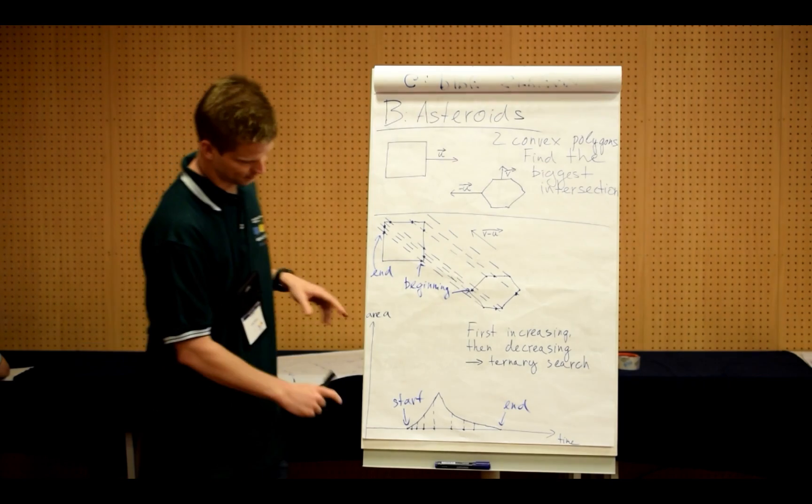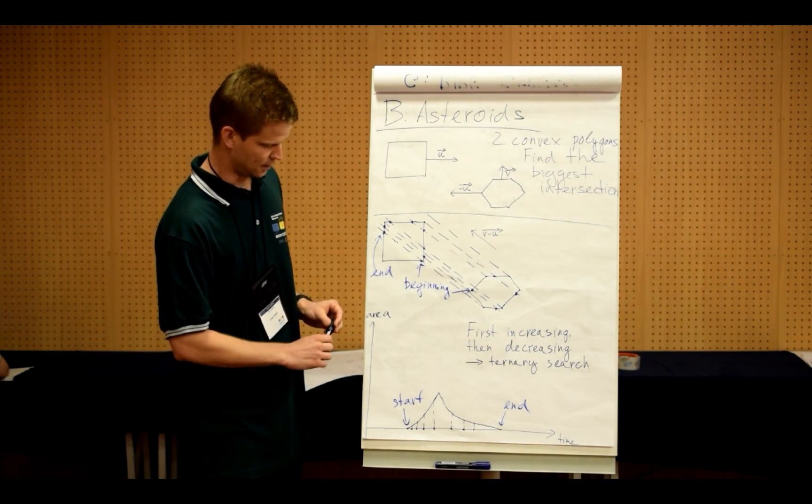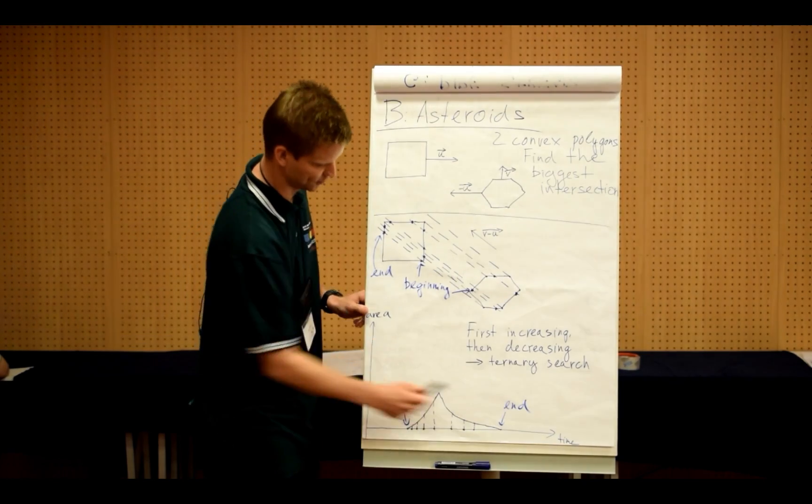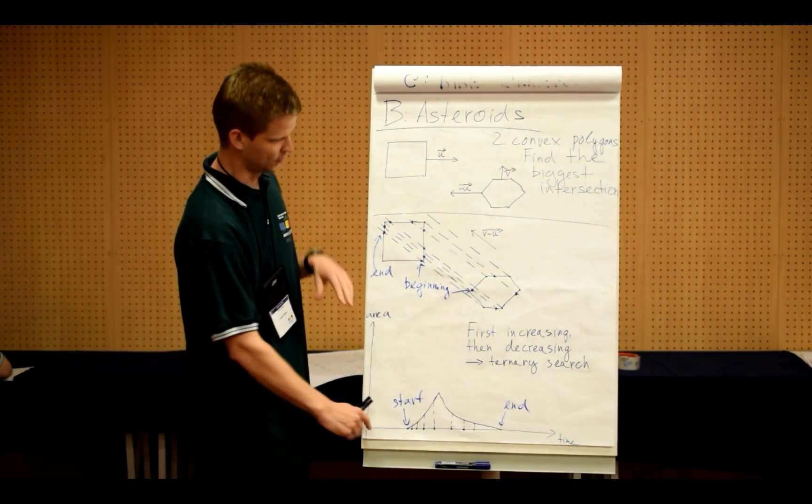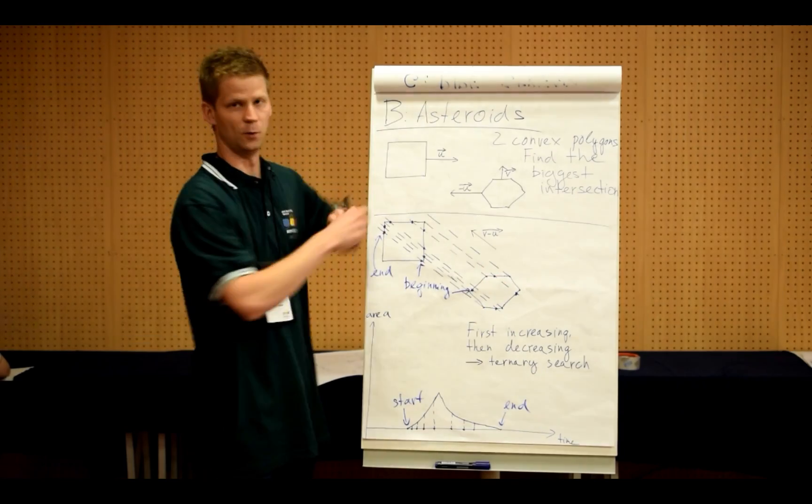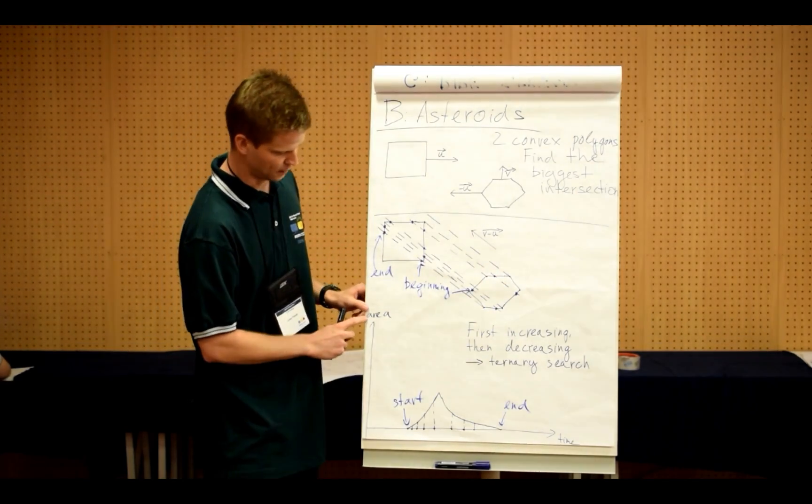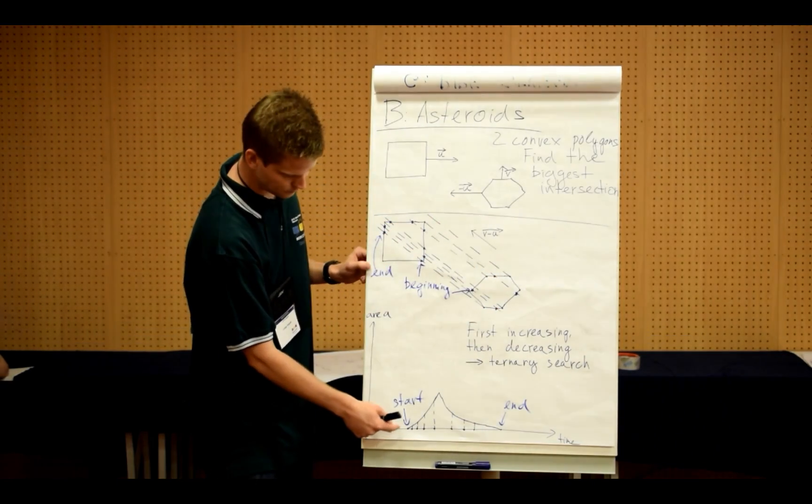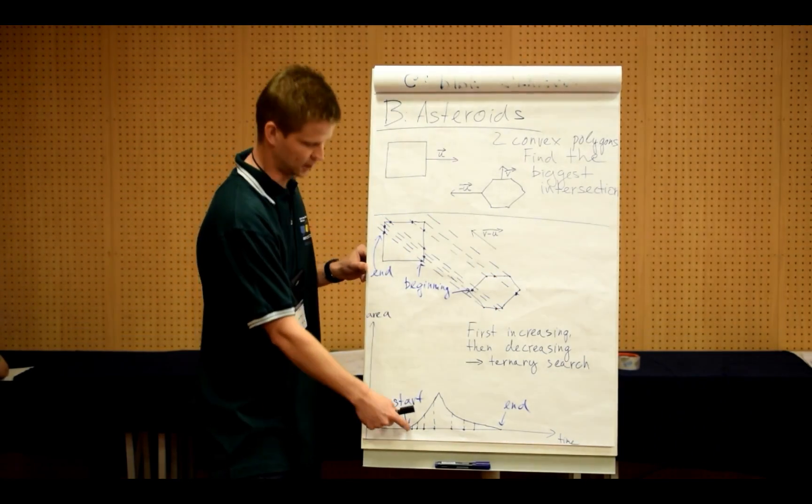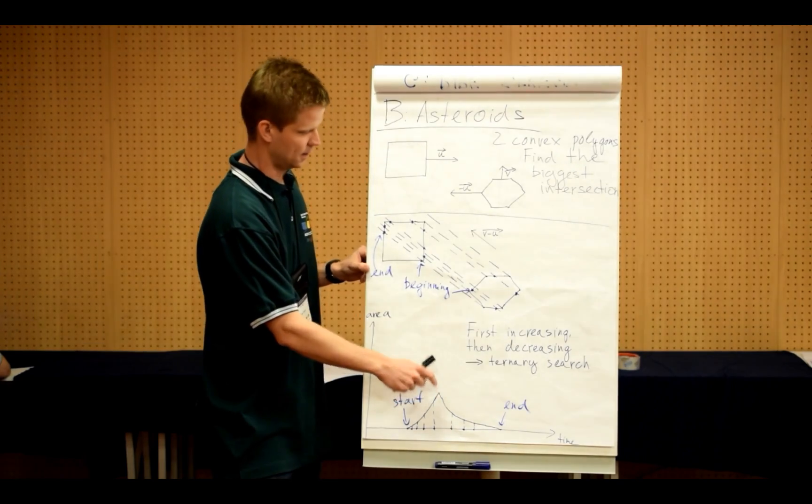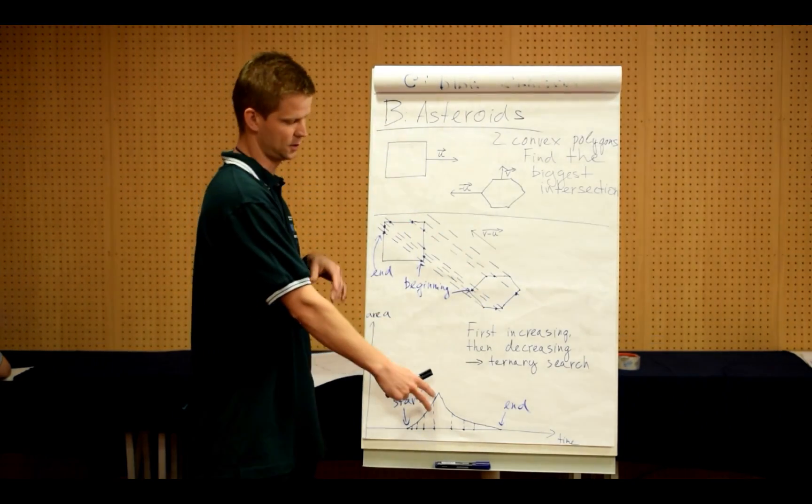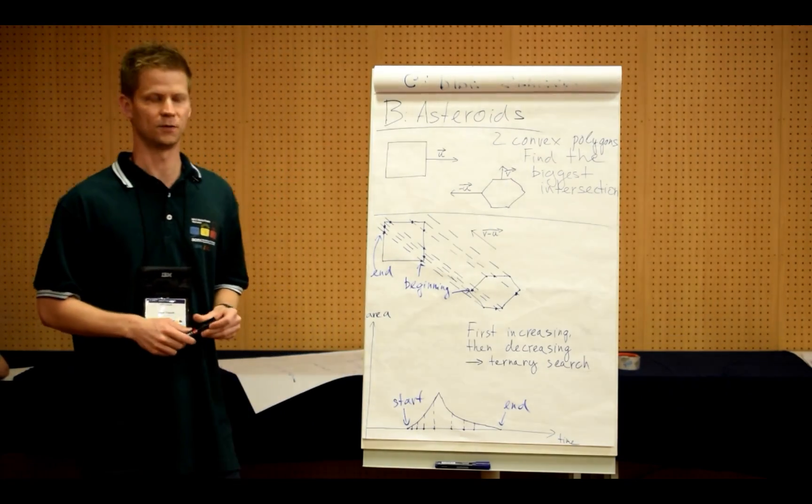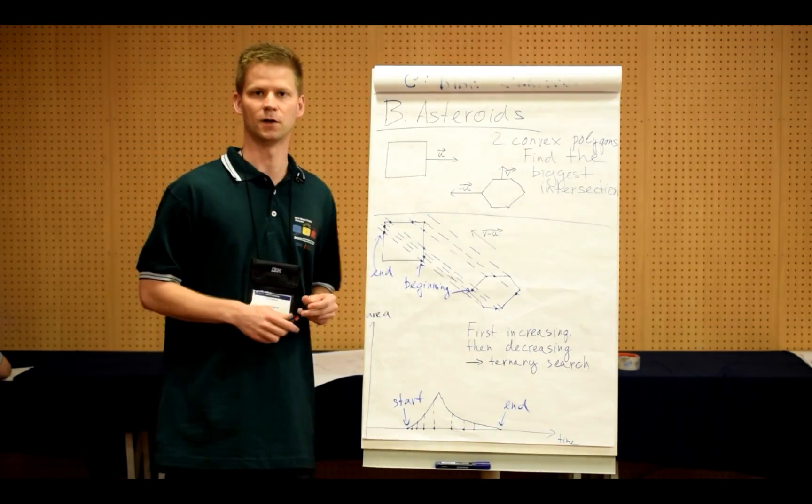The third observation is that this is a function of area with respect to time. We can observe that first these polygons are far away so they don't touch. The area of intersection is zero. But then they get closer and the area of this intersection goes up. At some point it reaches maximum and then it decreases again.